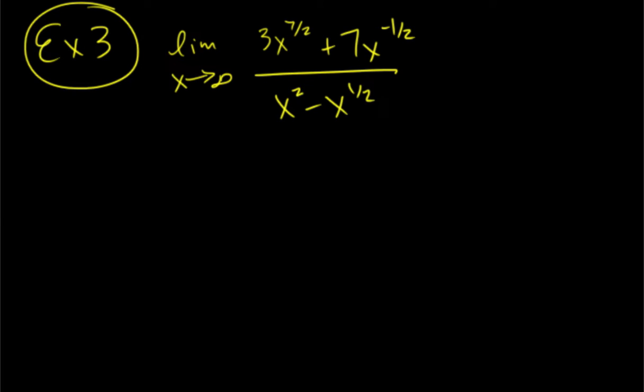And just like in the previous problem, we're going to divide everything by the highest power of x in the denominator. Okay, so that just becomes a 1 right there. This, we're going to think of it as 4 halves. And so 1 minus 4 is going to give me 1 over x to the 3 halves.